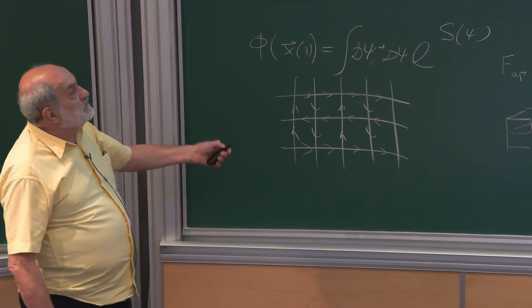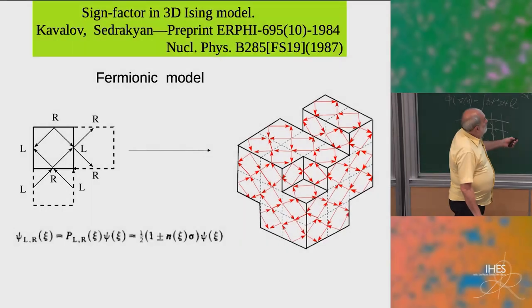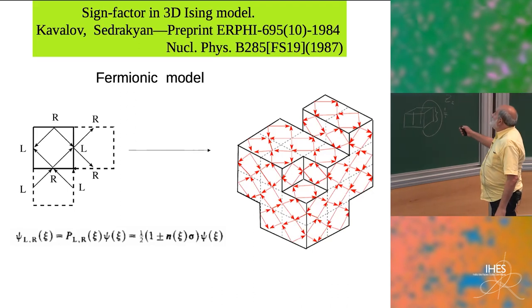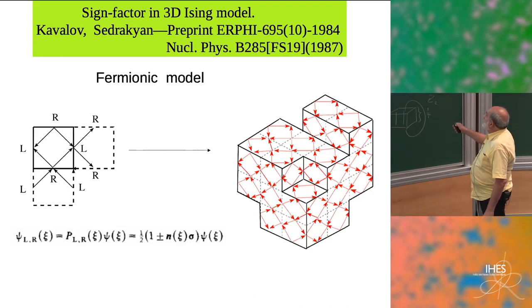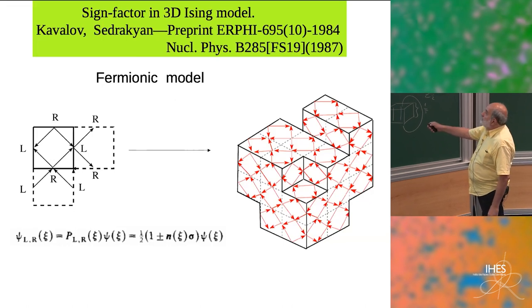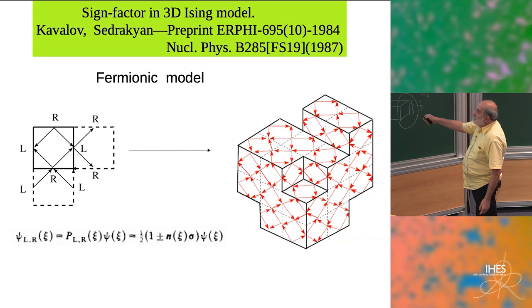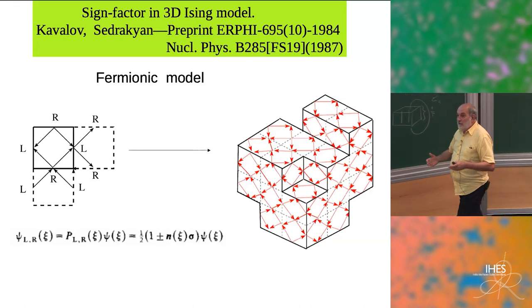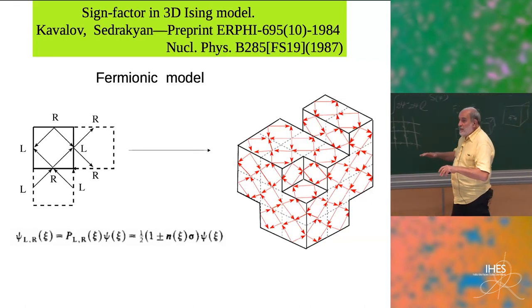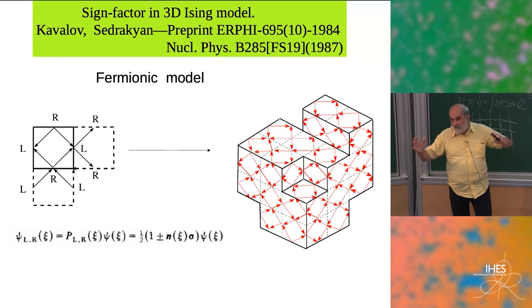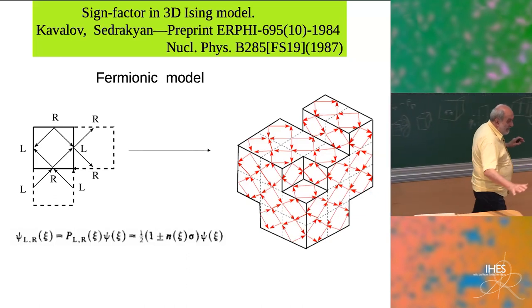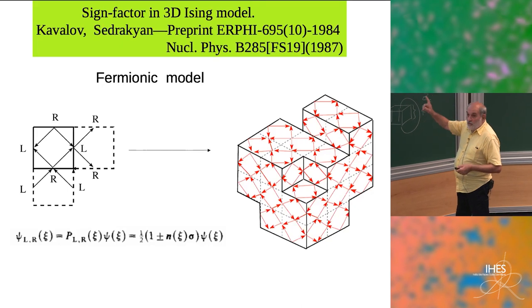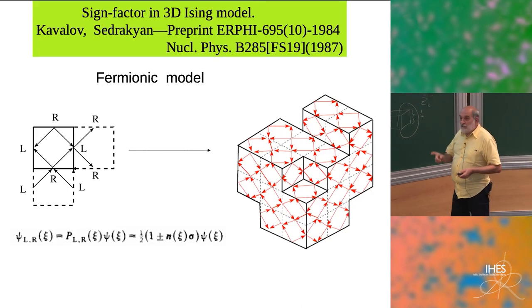Therefore, everywhere you have opposite directions. They are not crossing anywhere. You have a set of curved lattice, and on that lattice the arrows will show the direction of hopping for electrons.